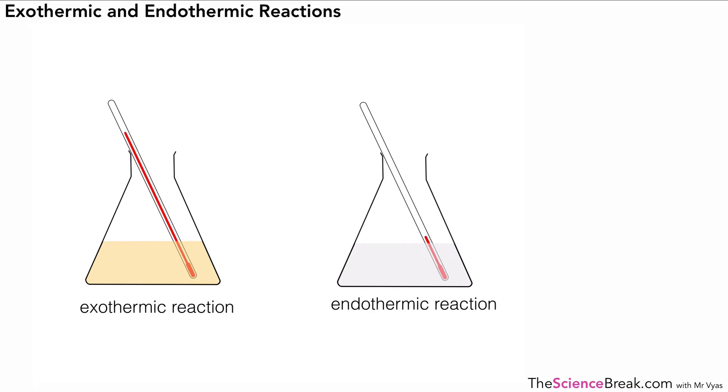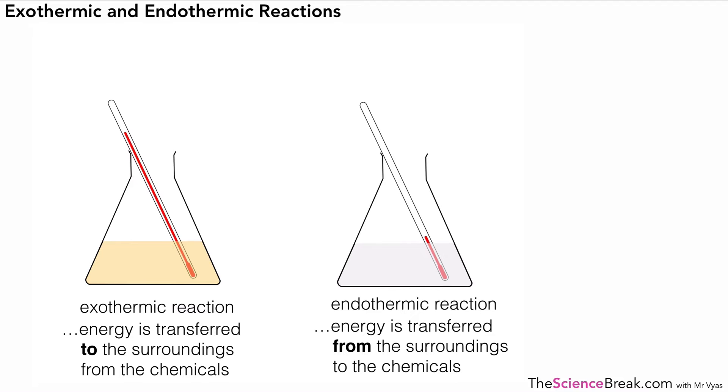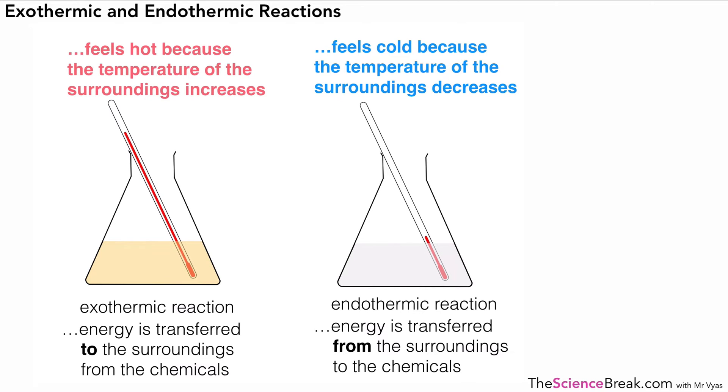If we see what's going on with the exothermic reaction, energy is transferred to the surroundings from the chemicals. With our endothermic reaction, energy is transferred from the surroundings to the chemicals. For the exothermic reaction it will feel hot because the temperature of the surroundings increases and for our endothermic reaction that actually feels cold because the temperature of the surroundings decreases. It might be worth pausing here just to make a note of those two because that's two very important points.